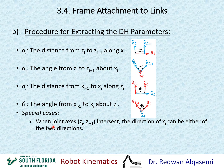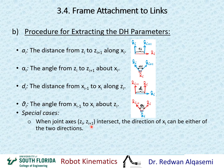There are two special cases. The first is when joint axes z_i and z_{i+1} intersect. If they intersect, the common perpendicular can go along the intersection, so the direction of x_i can be either of two directions. Normally x_i has to point from z_i to z_{i+1}, but if they intersect you cannot point from one to another. In that case, x_i can point in either direction as long as it is perpendicular to the plane that contains z_i and z_{i+1}.